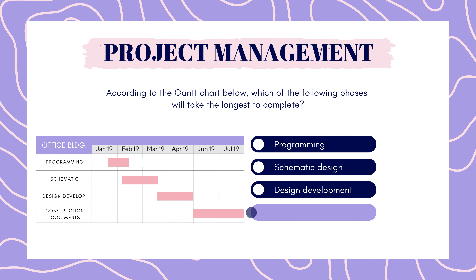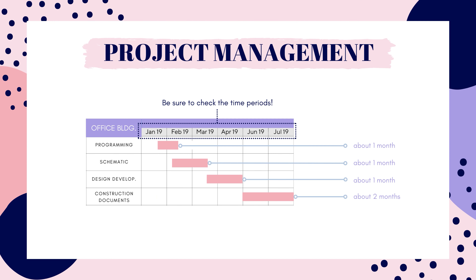The answer is construction documents. Programming, schematic design, and design development will each take one month. Construction documents will take the longest at two months. Obviously this is not a realistic schedule for the design of an office building, but it is similar to a layout of what you might see on the exam. Make sure you double-check the time periods of the schedule when you're testing — these may be in years, months, or weeks, so don't let that trip you up.